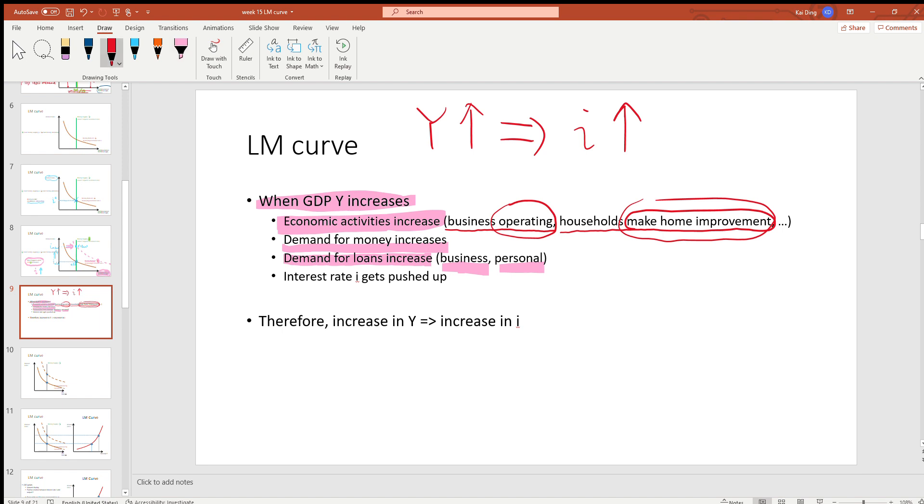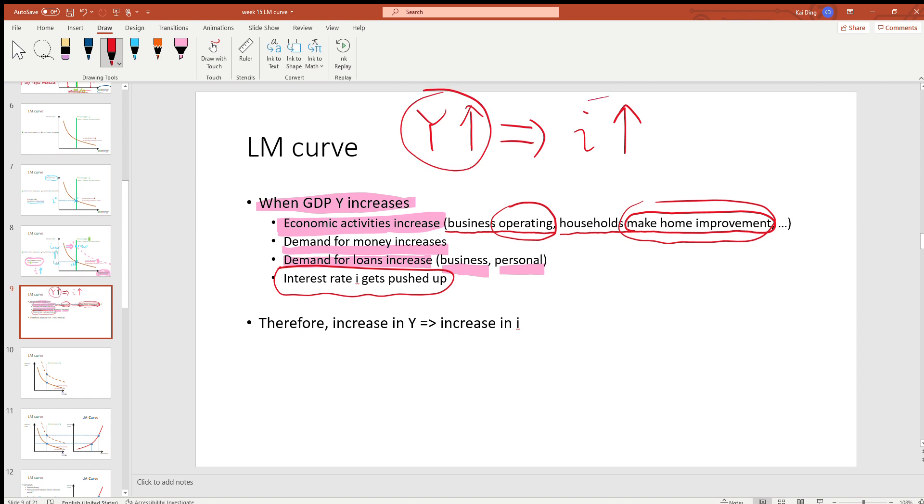When everybody goes to a bank and tries to take out a loan, this increased demand for loans would push up the interest rate I. As a result, a higher output translates to stronger demand for borrowing, and so interest rate I increases.